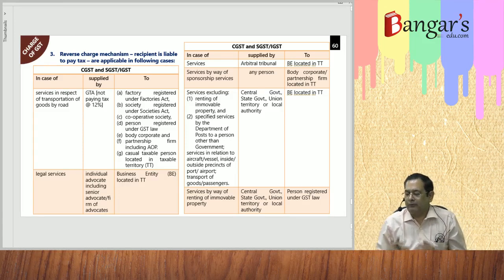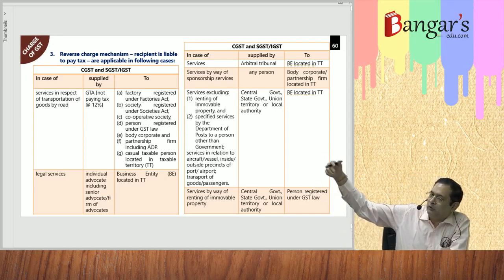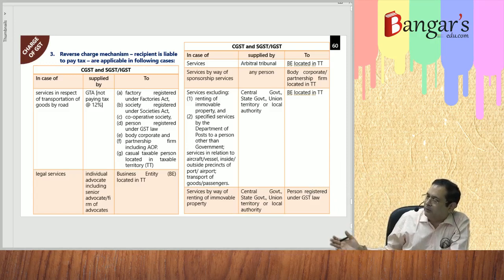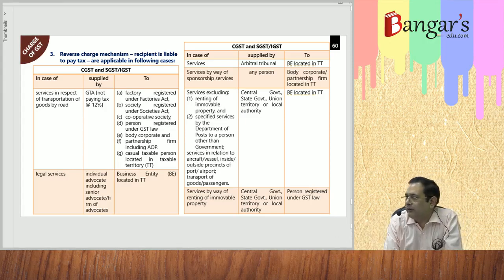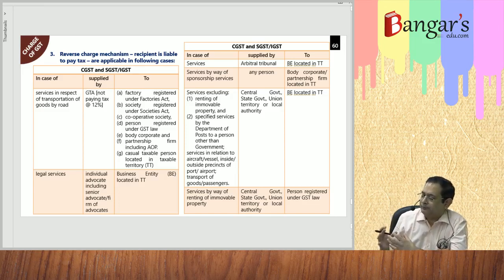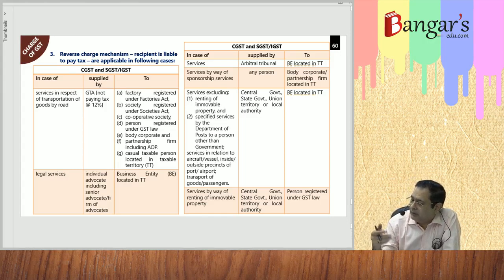Sponsorship services also attract RCM. For example, if Hindustan Unilever sponsors the Miss India contest, Hindustan Unilever is the recipient of service — it is a body corporate located in the taxable territory and will be liable to pay GST. When the central government, state government, union territory, or local authority provides services to business entities located in the taxable territory, reverse charge mechanism is applicable and the business entity will be liable to pay GST.